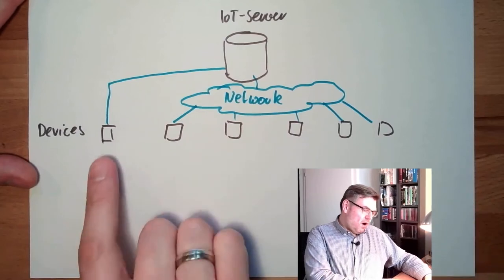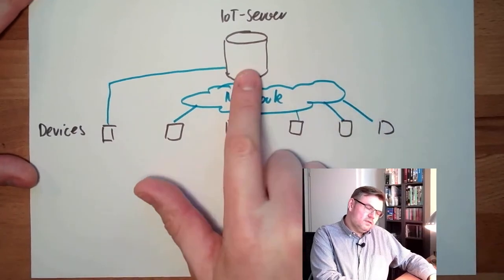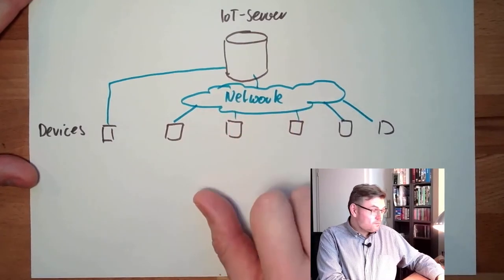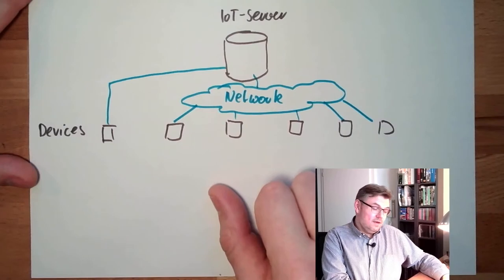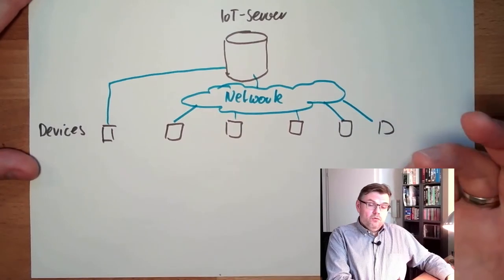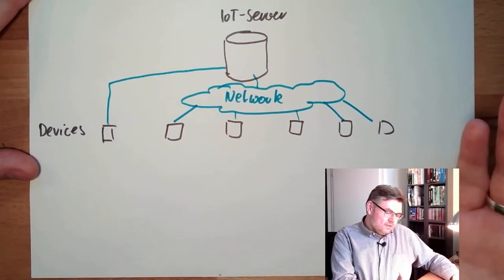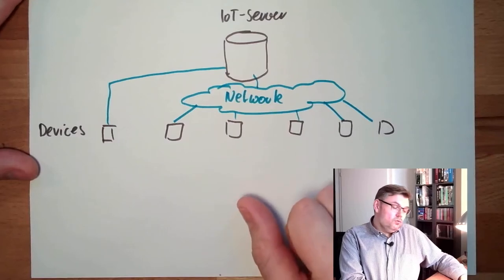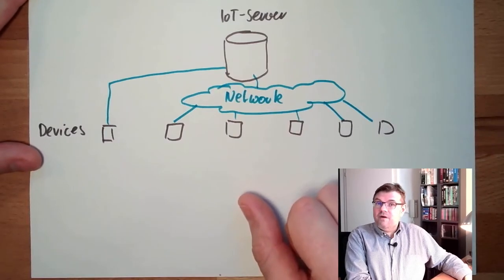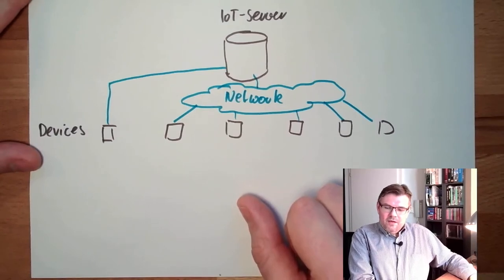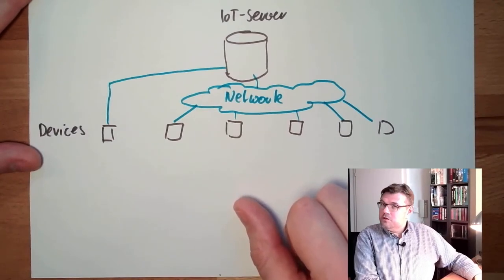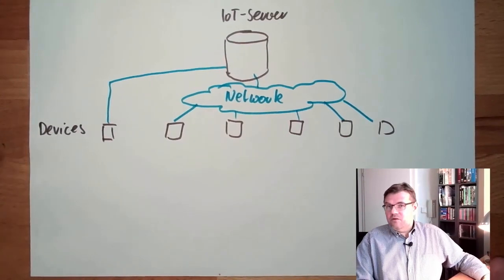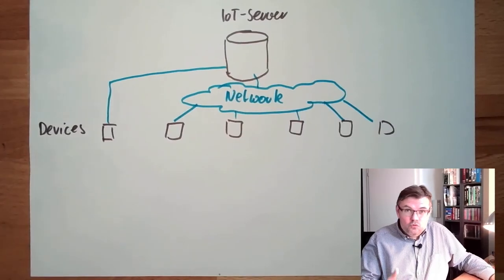So from our devices, we have to contact the server and therefore we need network access. We're going to use our Arduino for this. However, our Arduino Uno, also the Mega, they don't have network access. It would be nice to go into Wi-Fi or something like this. Well, there are microcontrollers out there which can do this and those microcontrollers are also programmable via the Arduino IDE, which we are currently used to already.